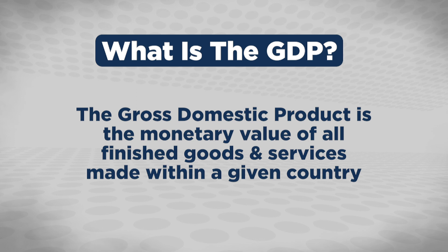Gross domestic product is the monetary value of all finished goods and services made within a country. It gives you the bar of economic growth — it's a really good measure. There are two different ways to look at it: there's nominal GDP, which is just the raw numbers, and then real GDP, which takes into account inflation, whether that be 2%, 3%, or whatever inflation may be. That's what most economists use, because what really matters is what the dollars are worth as time goes on.